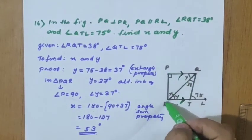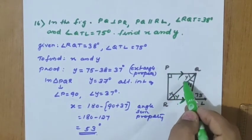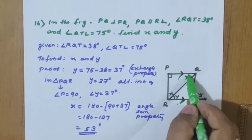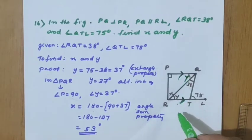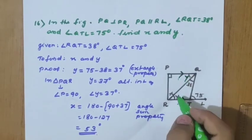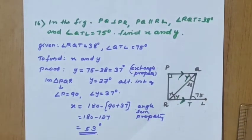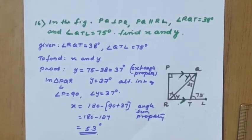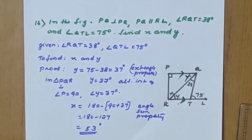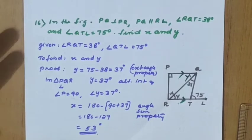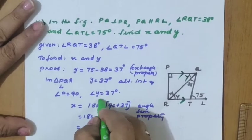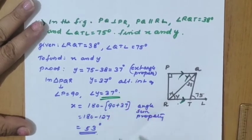Since the two lines are parallel, y here is an alternate angle, so y equals 37. Therefore x equals 53 and y equals 37 — we should underline the values.